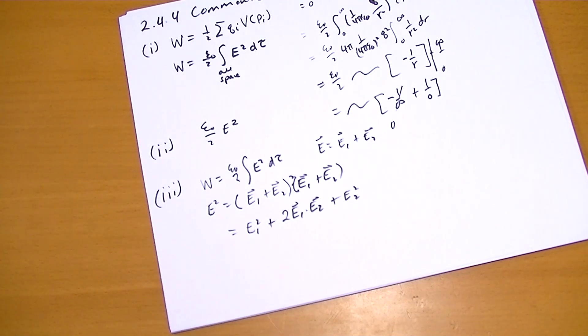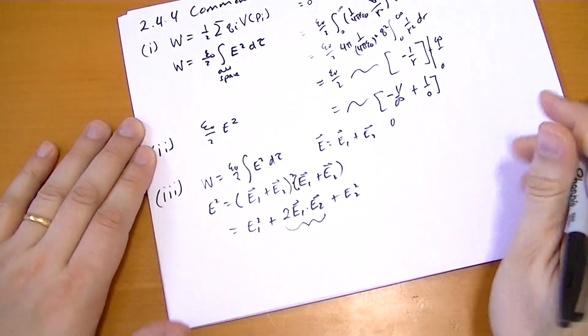So when we integrate over that, we have this extra cross term that's going to show up.